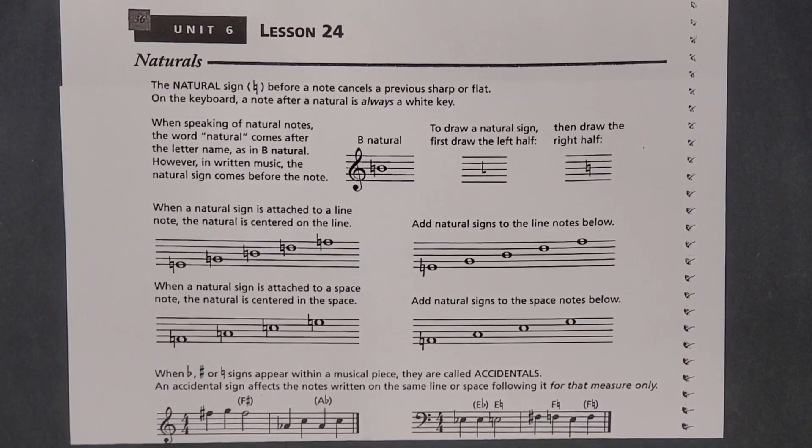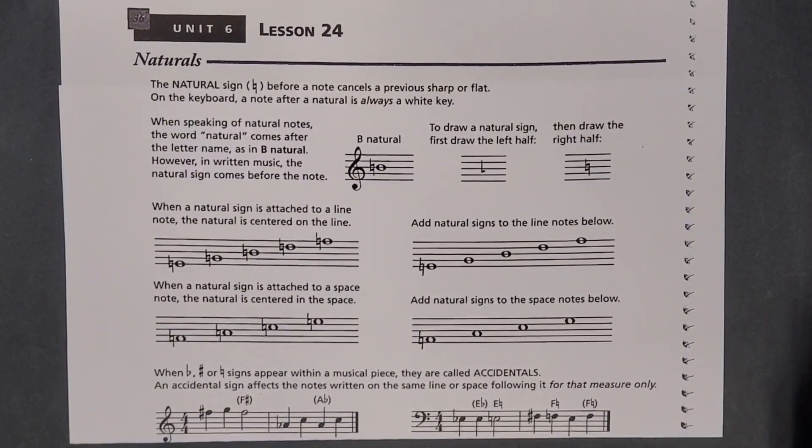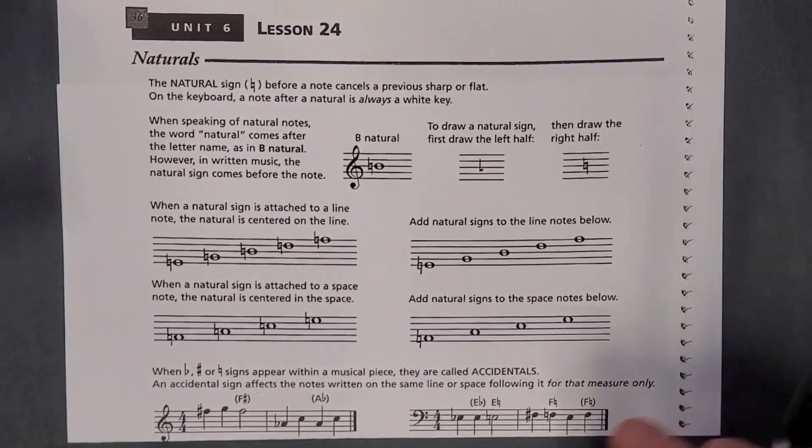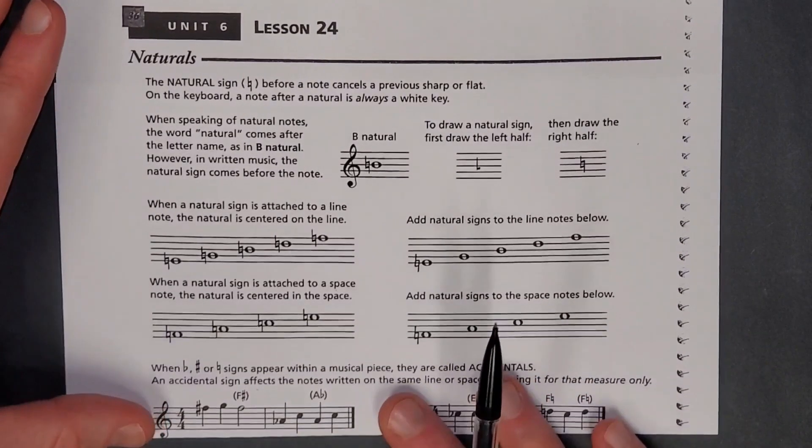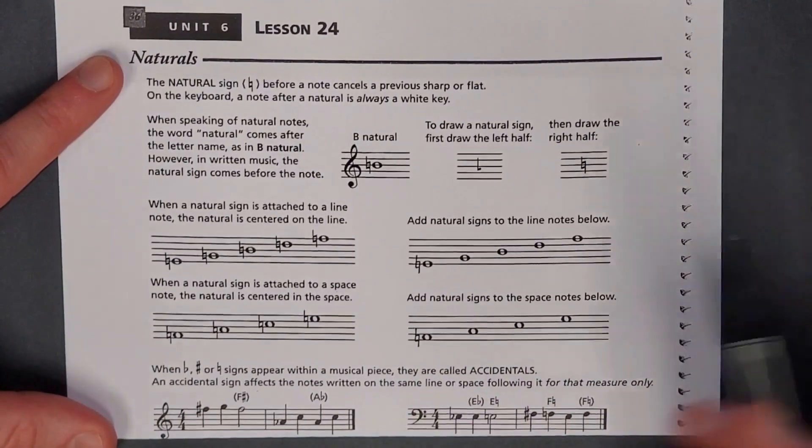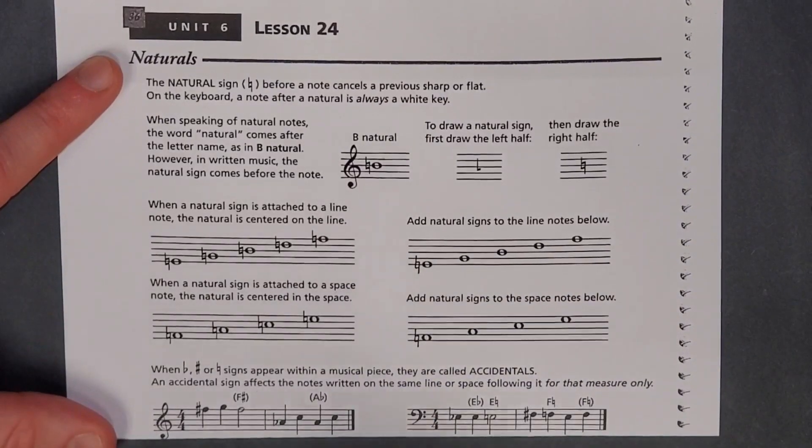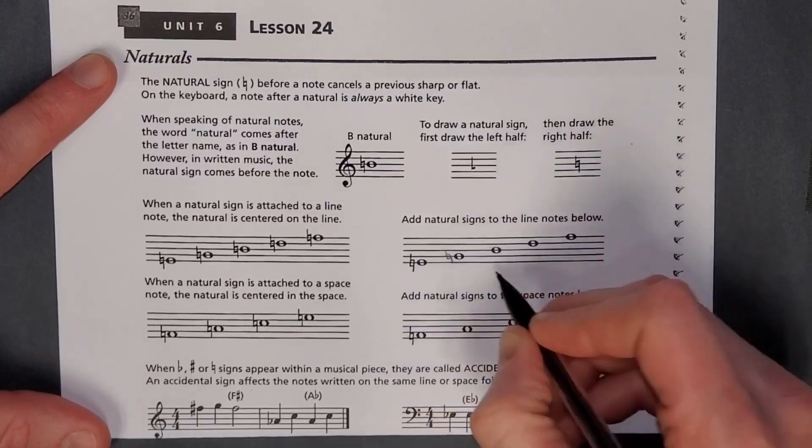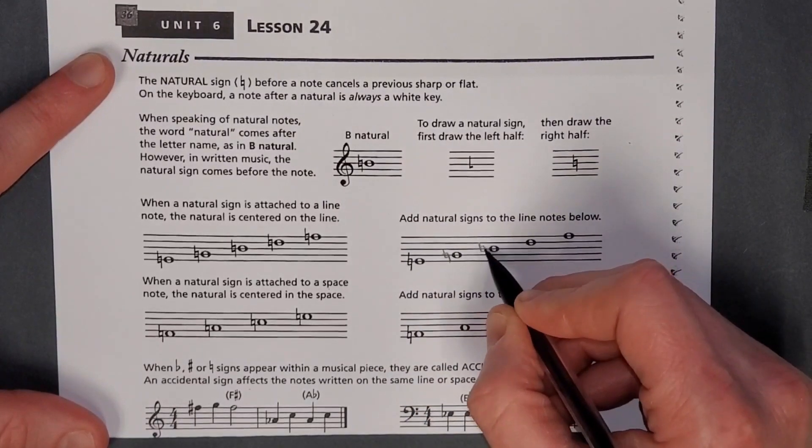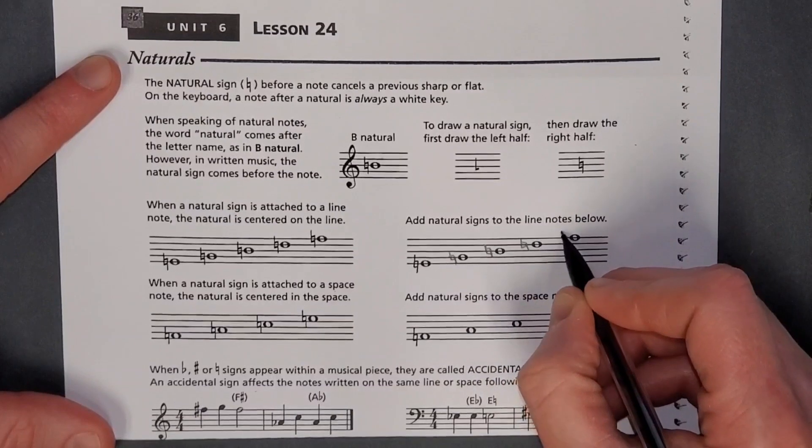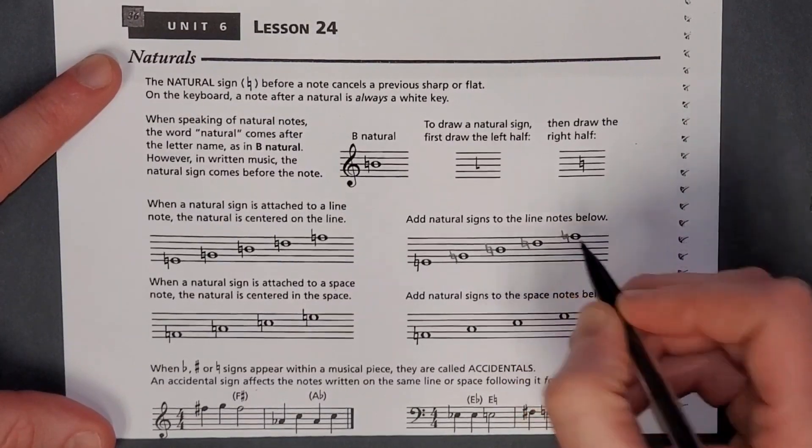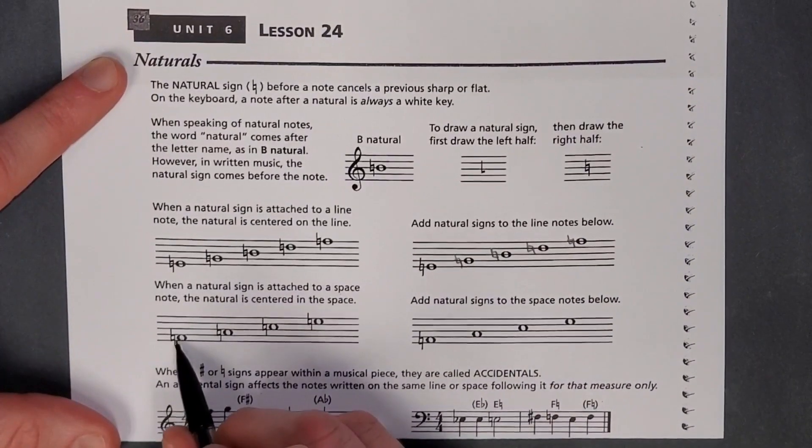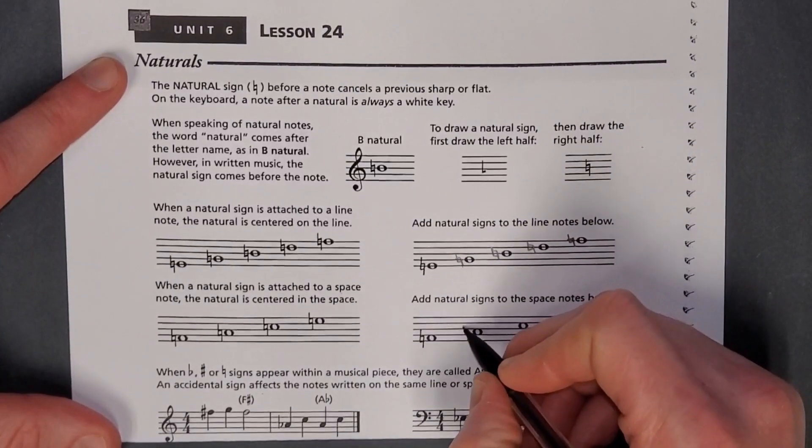When a natural sign is attached to a line note, the natural is centered on the line. It's right to the left of the note and center it on the line. And when it's on a space, center it on the space. Simple enough.